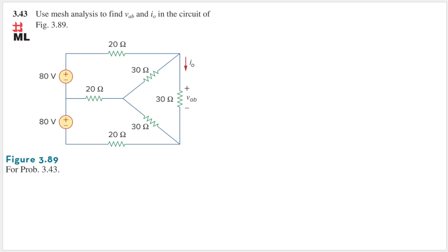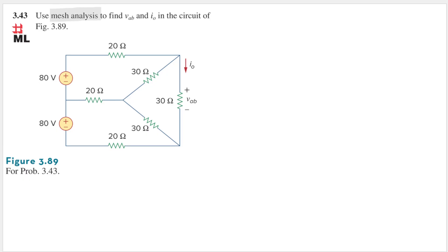Hello, my name is RD and we are going to solve problem 3.43 from the Sadiku book. The question asks us to use mesh analysis to find Vab and I0 in the circuit. Mesh analysis is essentially KVL — Kirchhoff's Voltage Law — applied to loop analysis. Let's name the loop currents as I1, I2, and I3.